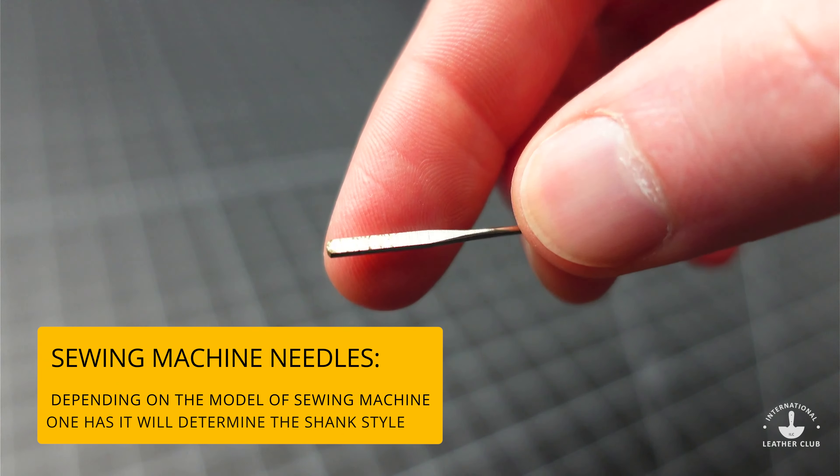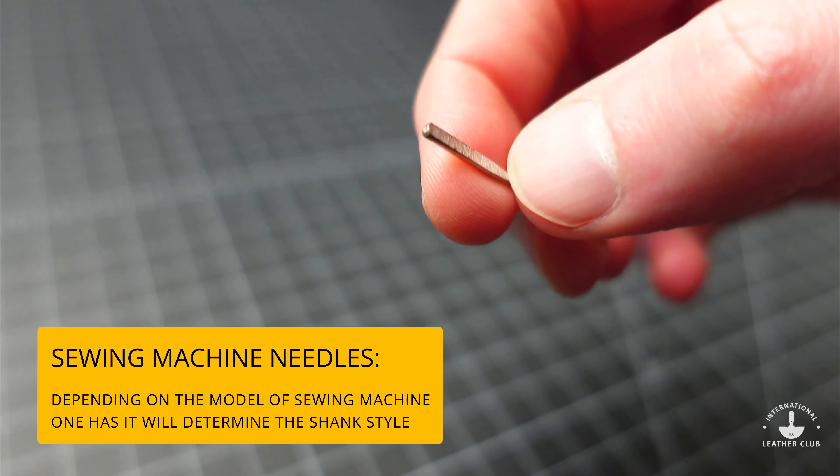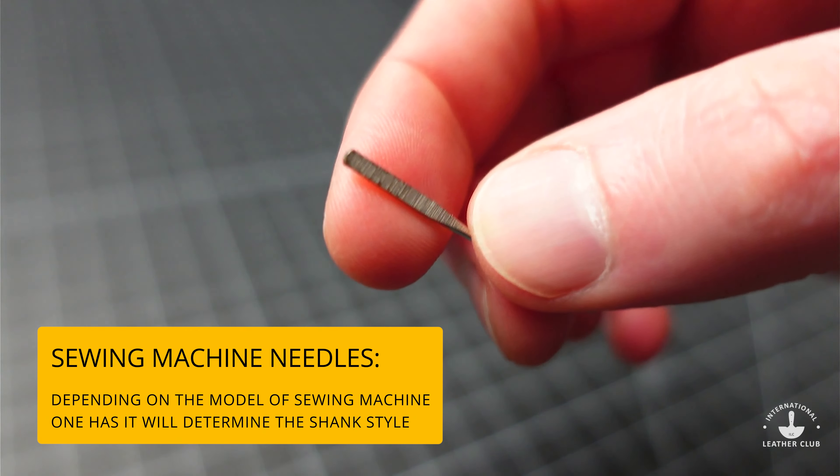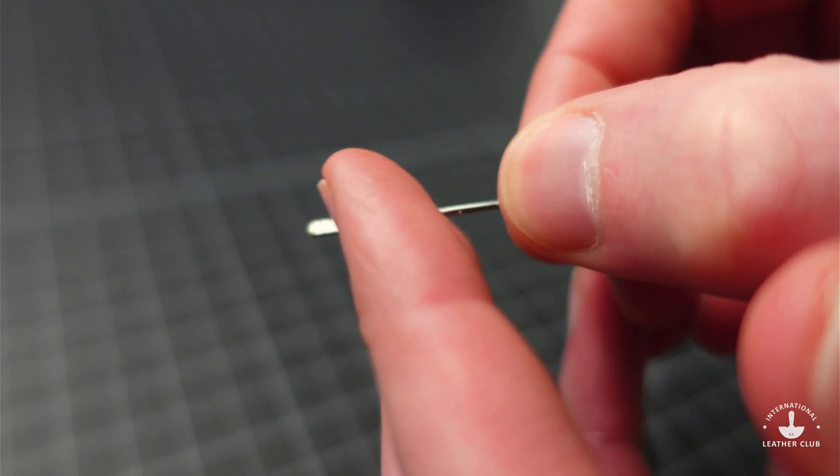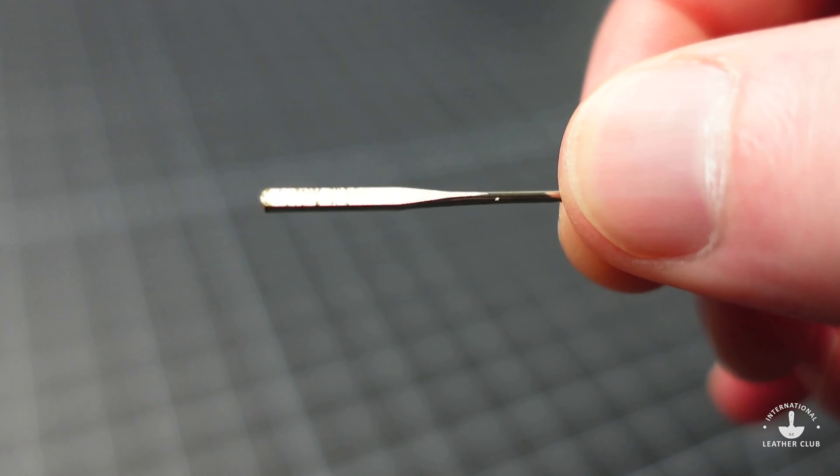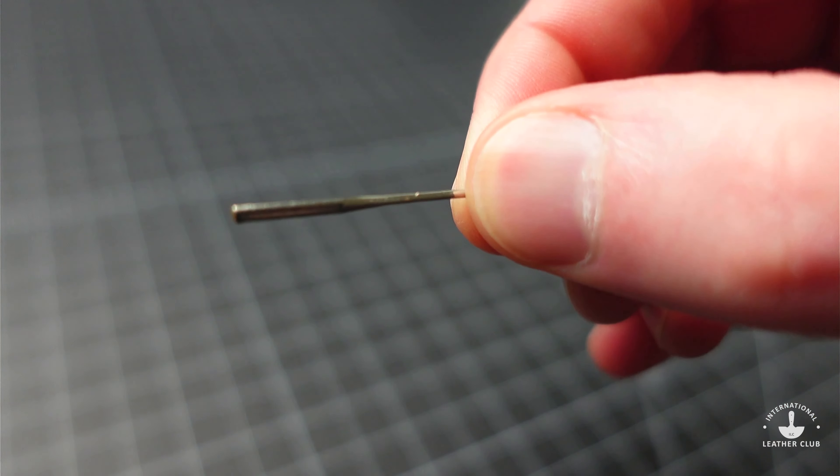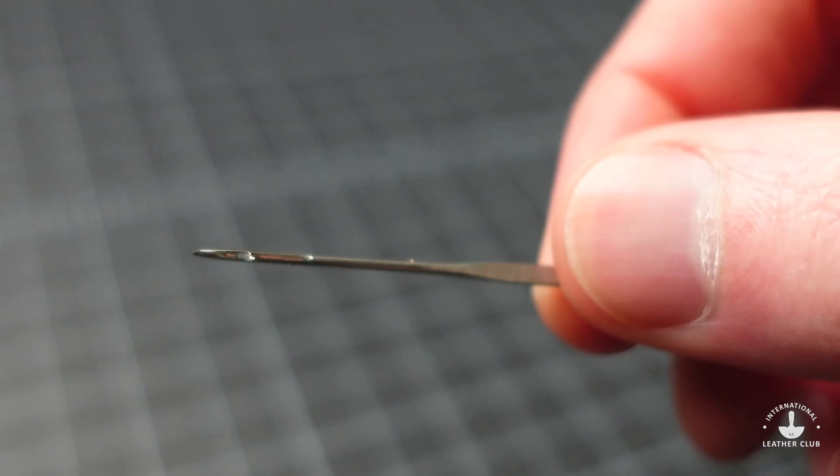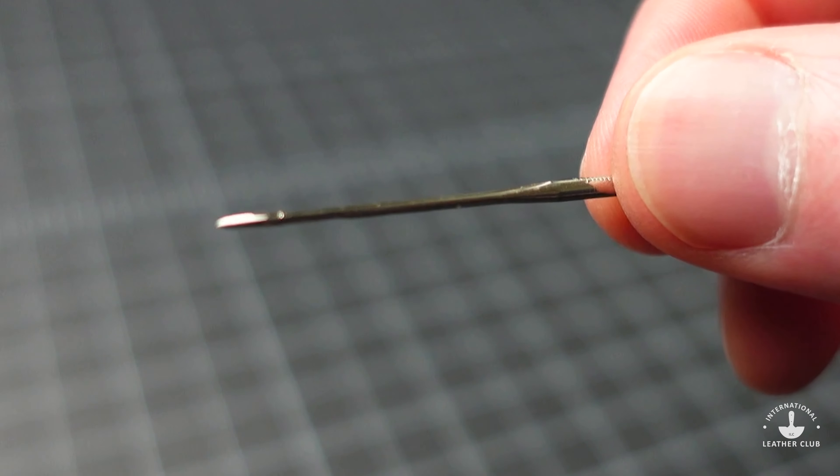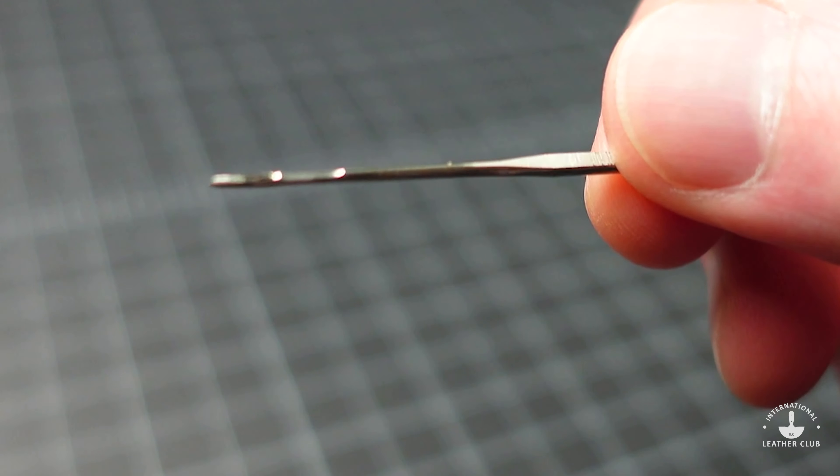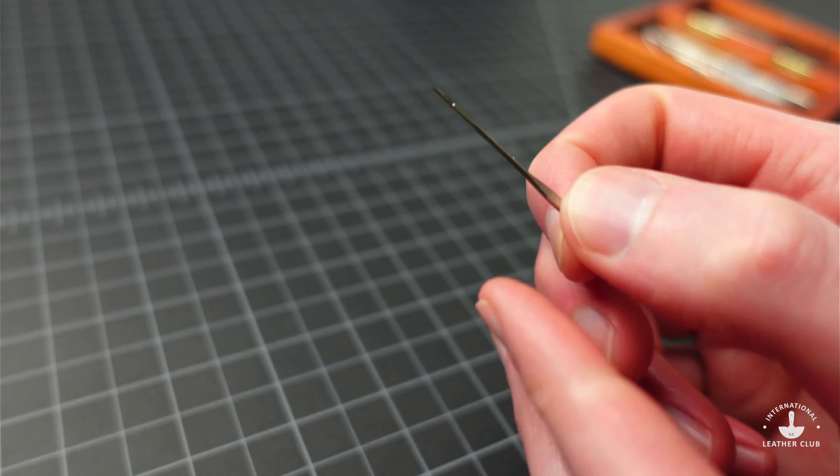Depending on the model machine and what you're using, that will typically determine the type of shank that you will choose. So you can see a flat end over there and then as you turn it, it kind of rounds out on the top. So this is more of the flat variety. And then on the end you can see where there's an eyelet towards the bottom where the thread would go through.